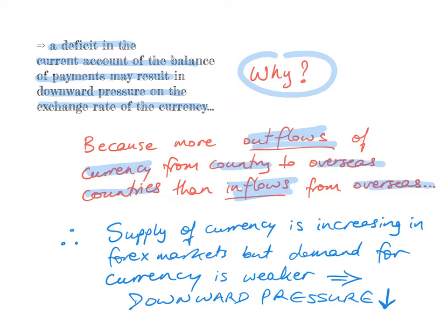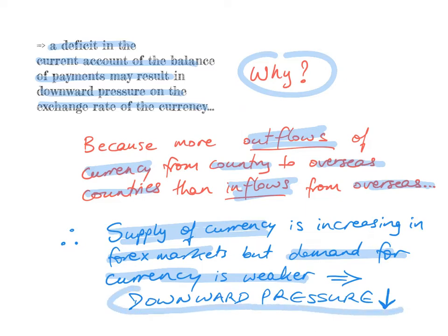This means that the supply of the country's currency is increasing in foreign exchange markets, but the foreign demand for the country's currency is weaker. So when supply of the country's currency increases and the foreign demand for the country's currency is weaker, this will exert a downward pressure on the value of the currency — on the exchange rate.